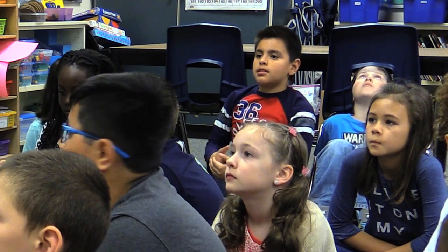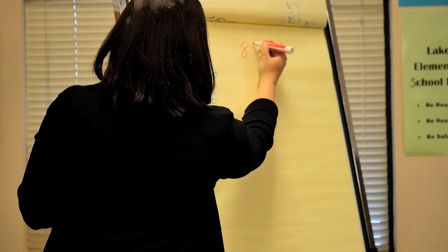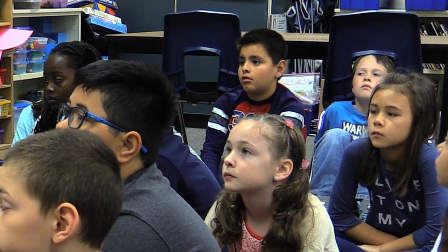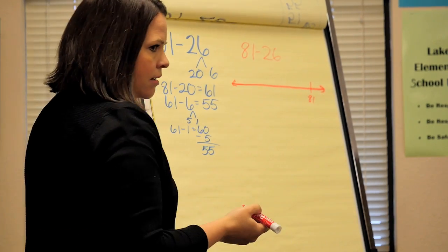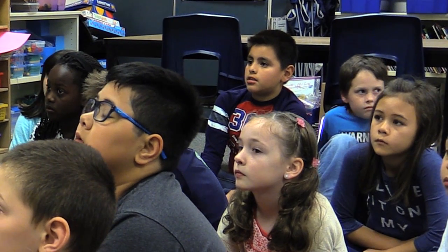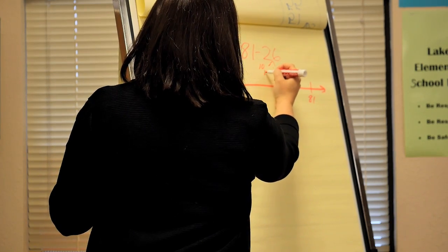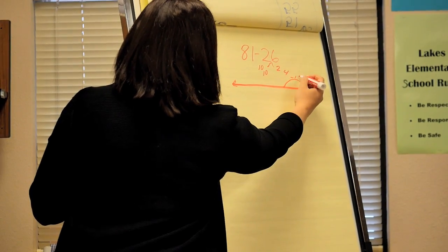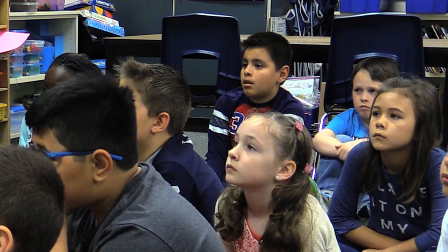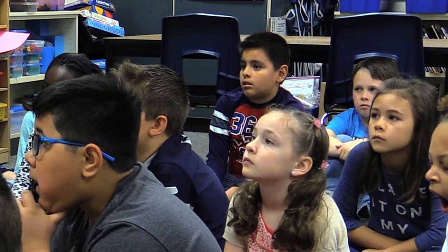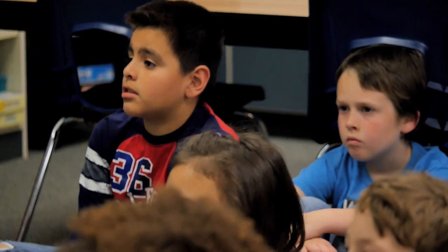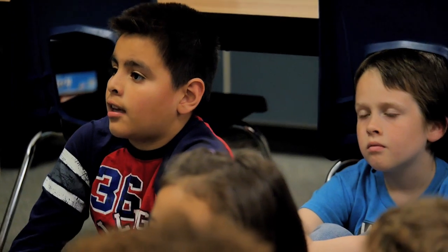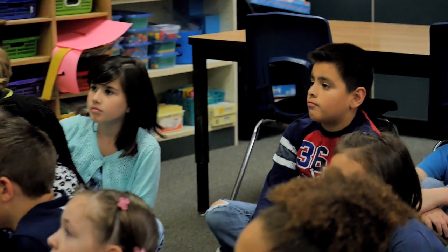How about Louise? I used a number line. I started at 81 on the right. I split up 26 into a 10 and a 10 and a 2 and a 4. Then I took away 10, which got me to 71. Then I minus another 10, and then I minus 2, and then I minus 4. Any comments or questions for Louise?